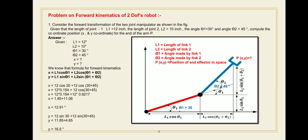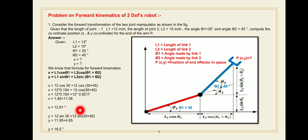In a similar way, find the y coordinate. y = l1·sin(theta1) + l2·sin(theta1 + theta2). Substituting: y = 12·sin(30°) + 12·sin(30° + 45°), which gives y = 11.85 + 4.65. The total vertical distance from the origin is y = 16.5.